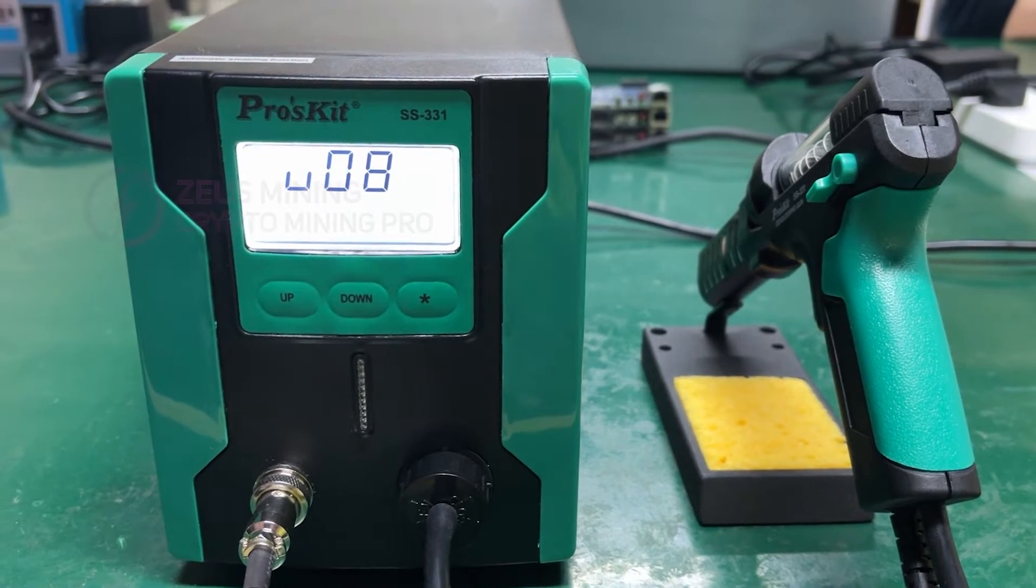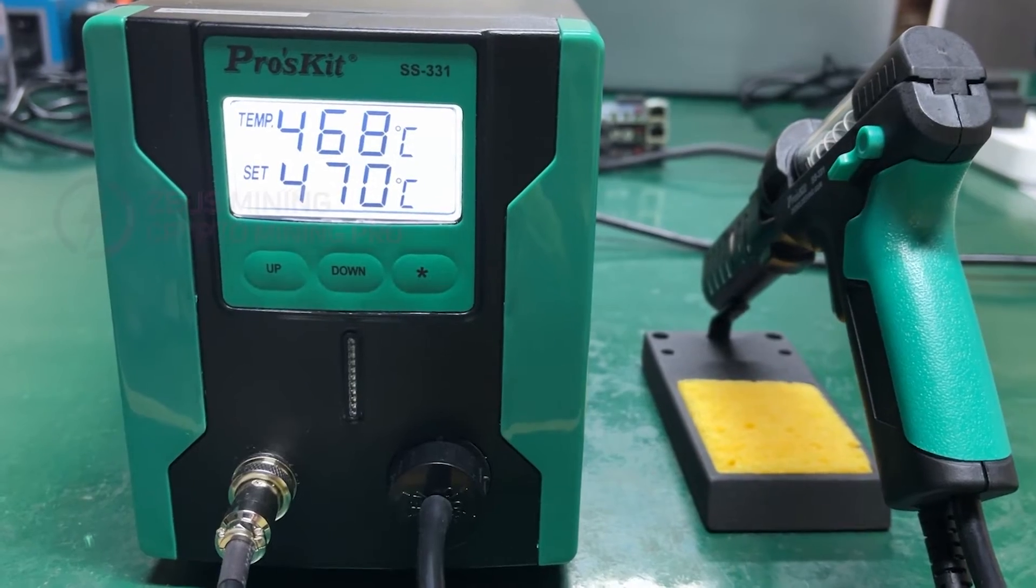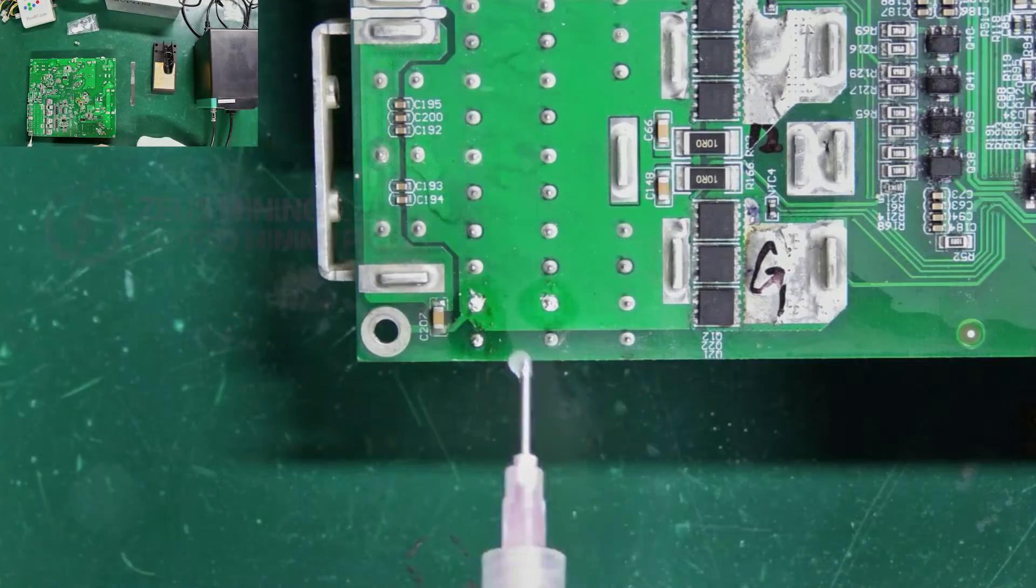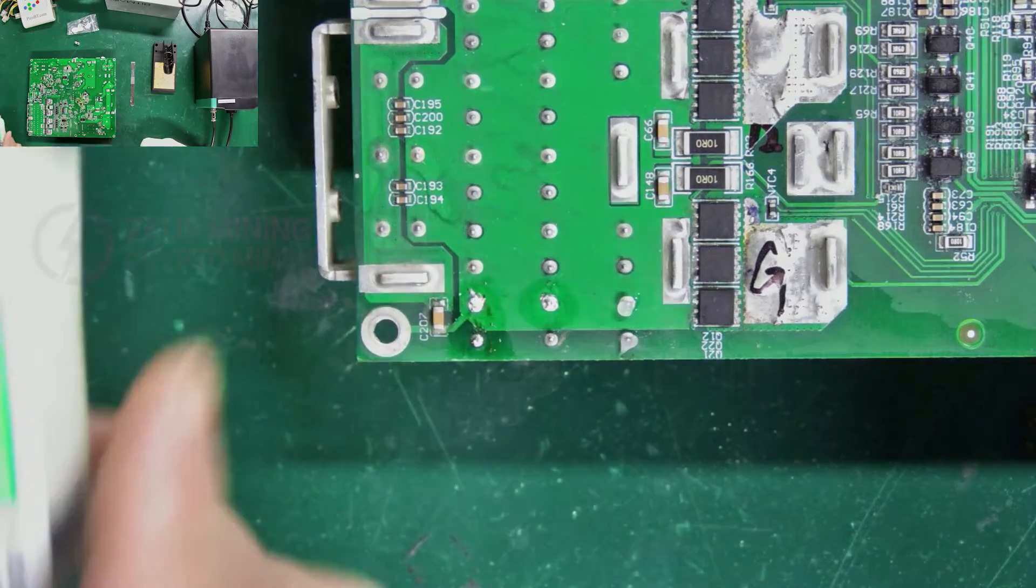Then turn on the switch, and it heats up rapidly to the set temperature. Similarly, first add flux to the pins to speed up the melting of the solder.